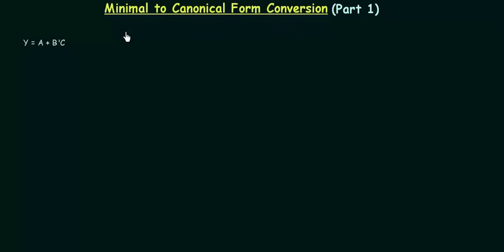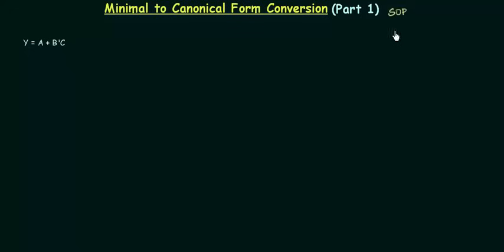We have decent knowledge of SOP and POS form. In the last presentation we did the conversion of canonical SOP and POS form to the minimal SOP and POS form. In this presentation we are going to do the reverse of it — we have the minimal form and we want to convert it to the canonical form. In part one we will only talk about the SOP form and in part two we will talk about the POS form.